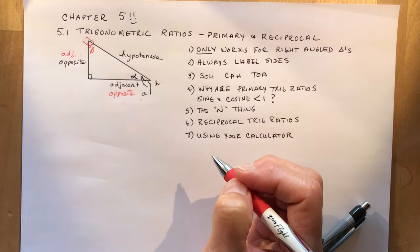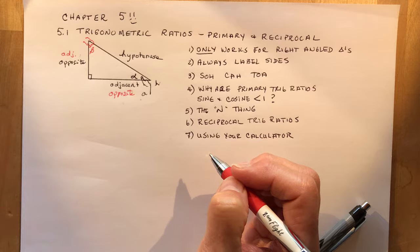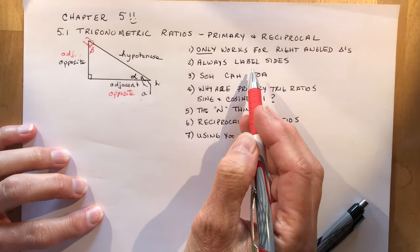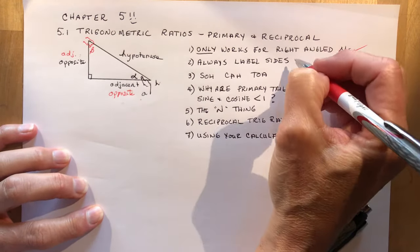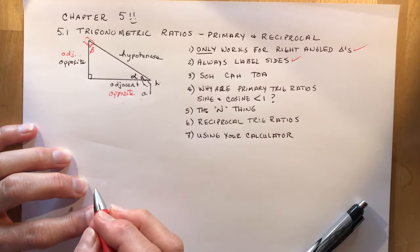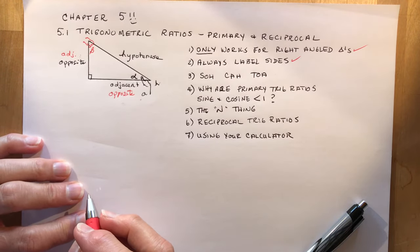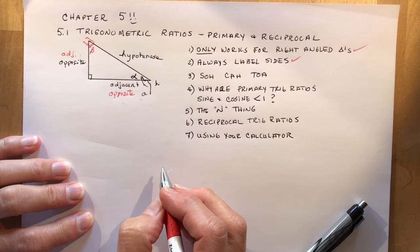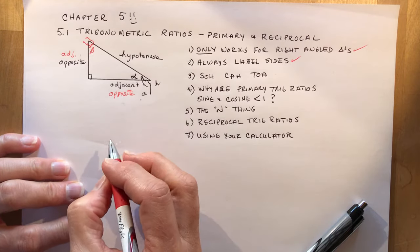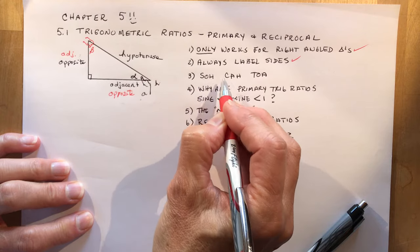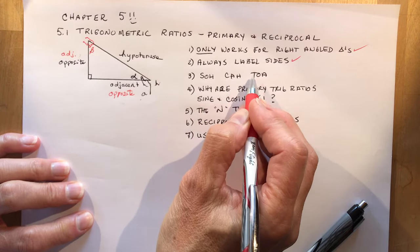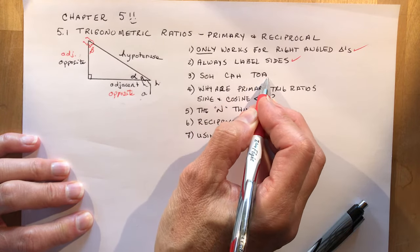You won't be able to do your trig ratios at all. So it's important to label the sides, only works for right-angle triangles, important to label the sides. And then from grade 10 you should remember SOH CAH TOA. So what does SOH CAH TOA mean?